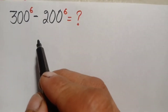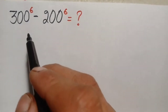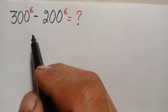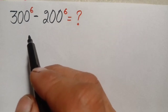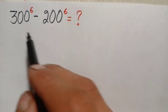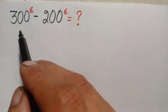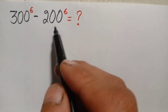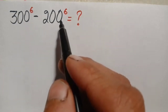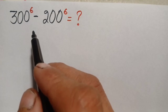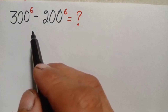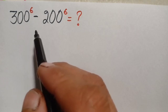Hello everyone, welcome. How to solve this interesting math problem without using a calculator and without any rough work. Looking at this problem — 300 raised to power 6 minus 200 raised to power 6 — it looks very simple, but it is not. It is a very big problem; it gives an answer not in millions and billions, but in trillions.